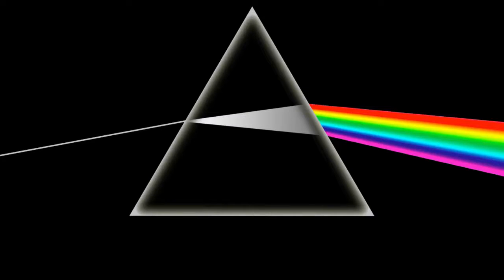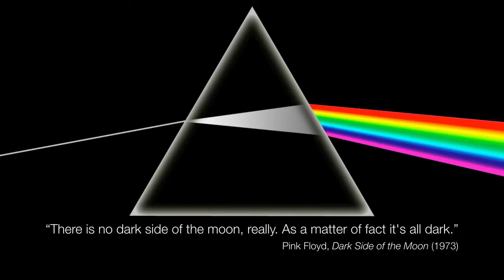Now, if you listen to Pink Floyd's Dark Side of the Moon, you may have noticed that after the very end of the last track, there's a voice overheard that says, 'There is no dark side of the moon, really. As a matter of fact, it's all dark.' And I think that's a great way to wrap up this presentation on the moon, because we have shown that there is no such thing as a dark side — that is, the near side of the moon is not always illuminated. Sometimes it's dark. So the moon is dark at some point or another.